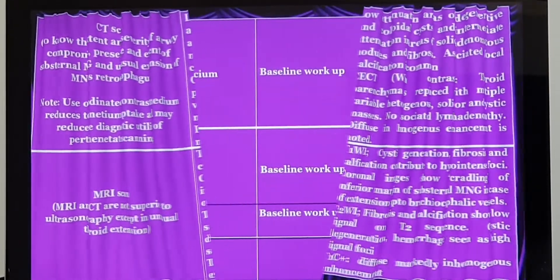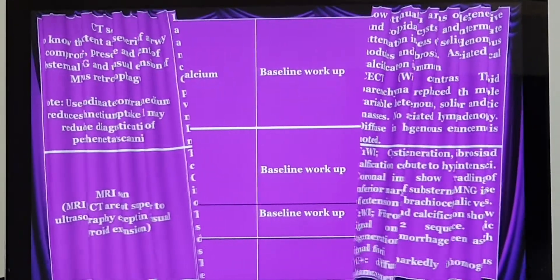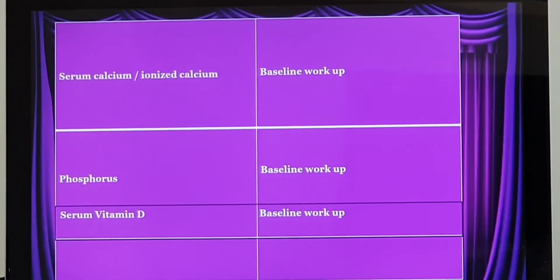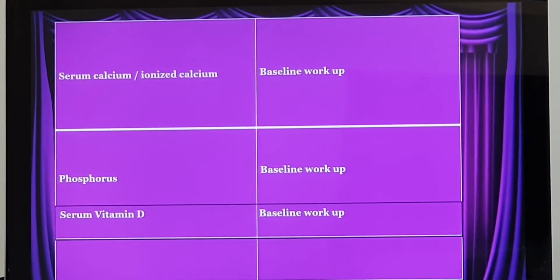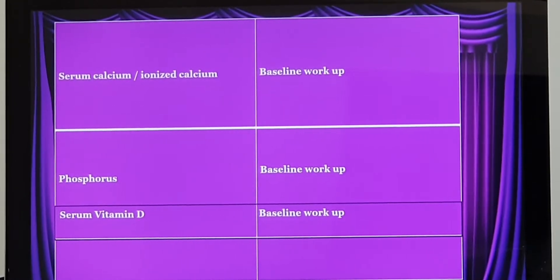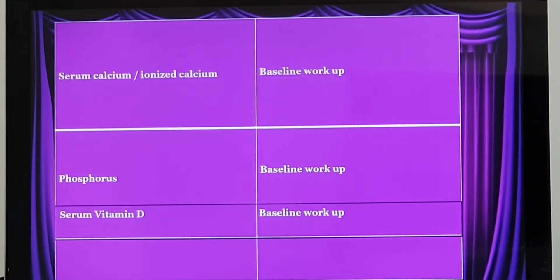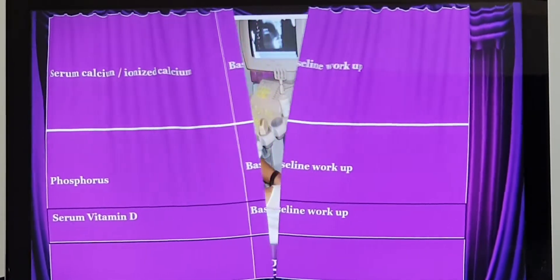Other baseline investigations: we need to know the serum calcium level. It is better to do ionized calcium and corrected calcium, because suppose post-operatively the patient develops hypocalcemia and the calcium level drops — it is always best to know the normal value before surgery. Along with that, it is preferred to do serum phosphorus level and serum vitamin D level also.